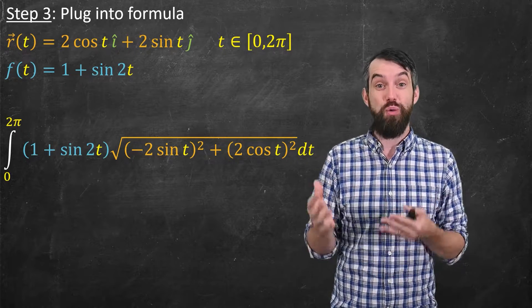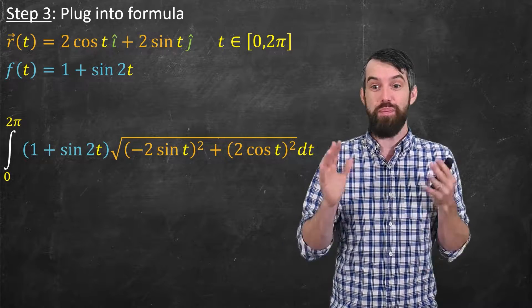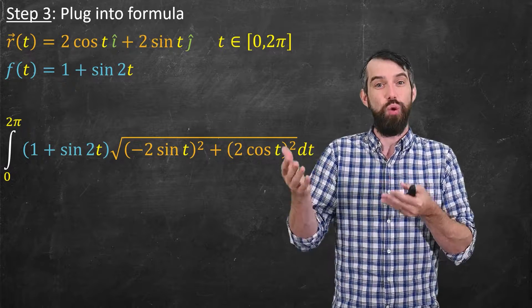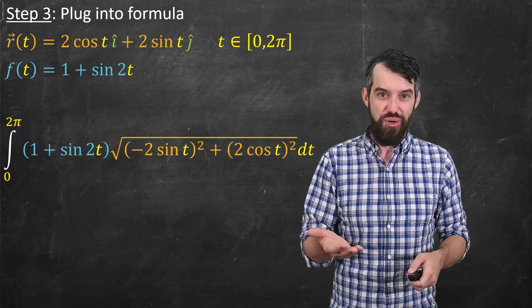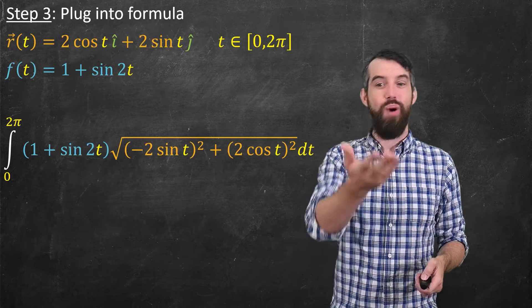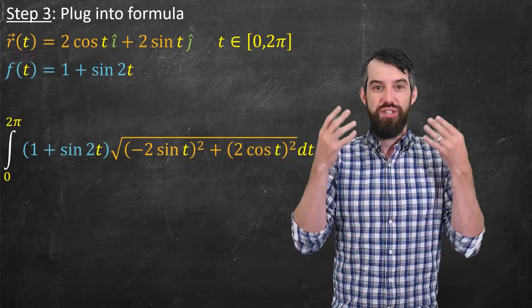Again, this is a nicely computable example, because everything under the square root is just a Pythagoras. Sine squared plus cos squared is 1. And so, because of the 2's, they squared up to 4, and the square root takes them back to 2. Either way, all of that just simplifies to 2.